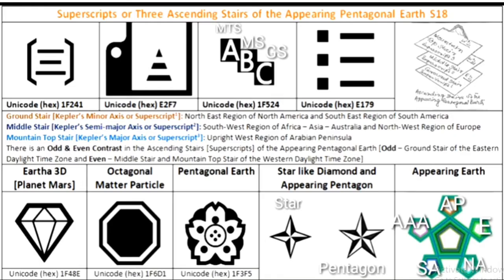In this slide, we try to understand three ascending stairs — ground stair, middle stair, and mountain top stair of the appearing pentagonal earth like 9-11 Pentagon. Ground stair: Northeast region of North America and Southeast region of South America. Middle stair: Southwest region of Africa, Asia, Australia, and Northwest region of Europe. Mountain top stair: Upright West region of Arabian Peninsula.